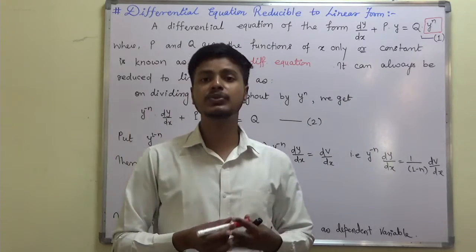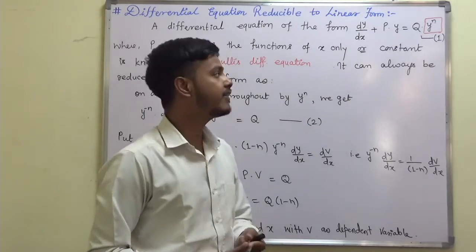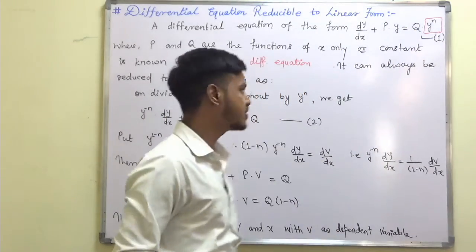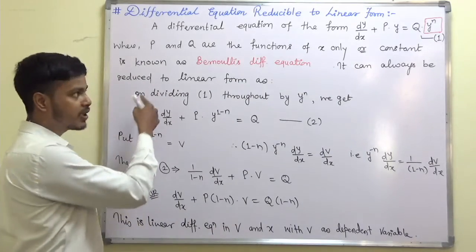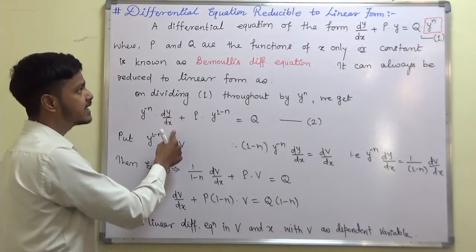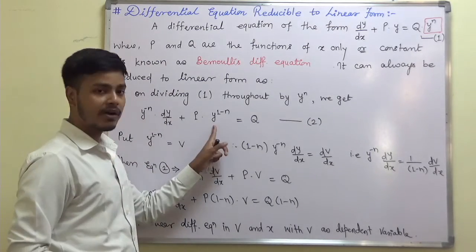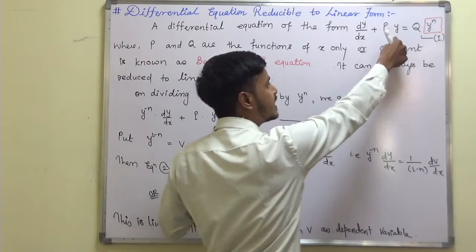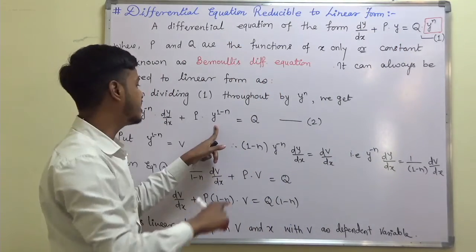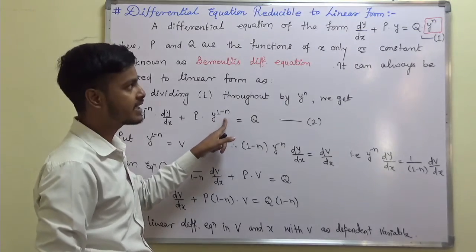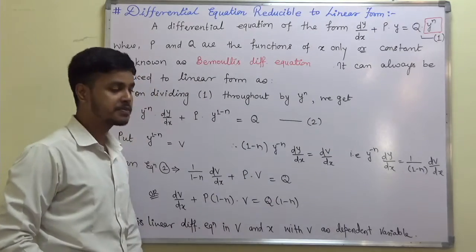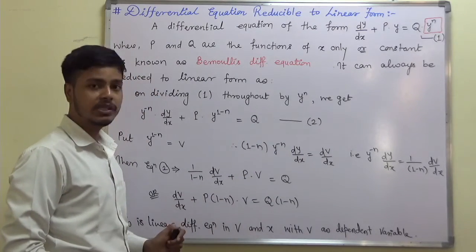To reduce it to linear form, divide by y^n throughout the equation. You get y^(−n) dy/dx plus P·y^(1−n) equals Q. This is equation 2.